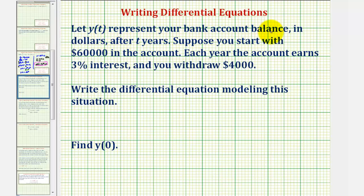Let y(t) represent your bank account balance in dollars after t years. Suppose you start with $60,000 in the account. Each year the account earns 3% interest and you withdraw $4,000. We're going to write the differential equation modeling this situation.